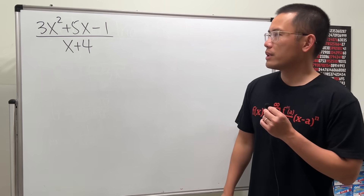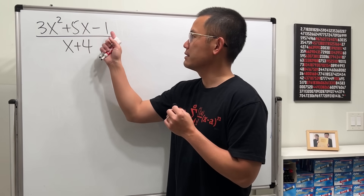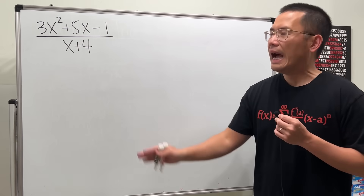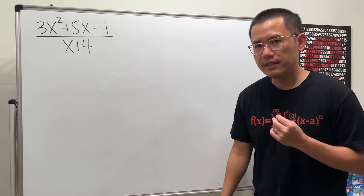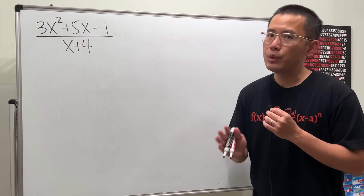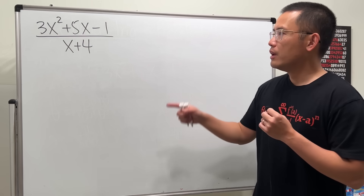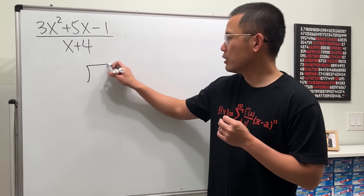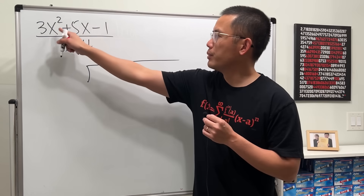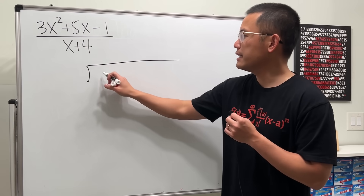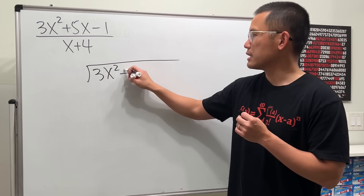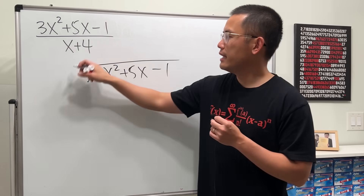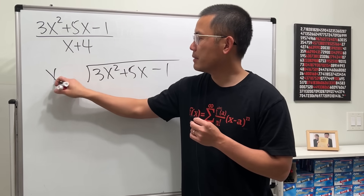The first example is (3x² + 5x - 1) over (x + 4). For polynomial long division, you want to first draw the long division bar and then put the top on the inside — so 3x² + 5x - 1 — and then the bottom on the outside.